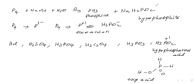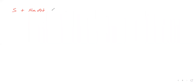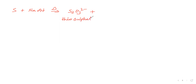For balancing the equation: sodium hydroxide is 3, water is 3, sodium hypophosphite is 3, and phosphine is 1. Next reaction: sulfur with sodium hydroxide — sulfur boiled with sodium hydroxide gives thiosulfate (S₂O₃²⁻) and sulfide.